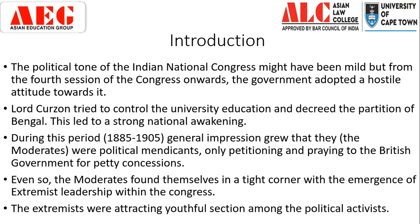The moderates found themselves in a tight corner with the emergence of extremist leadership within the Congress. The moderates suddenly realized there was a group within Congress now talking about more radical formulations and radical steps, and they were growing in number and getting support within Congress. By 1905-1906, we find a change in the language of these moderate leaders. From saying they would talk to the British government for concessions, they decided they were going to fight for self-rule. Extremists were attracting youthful sections among political activists.